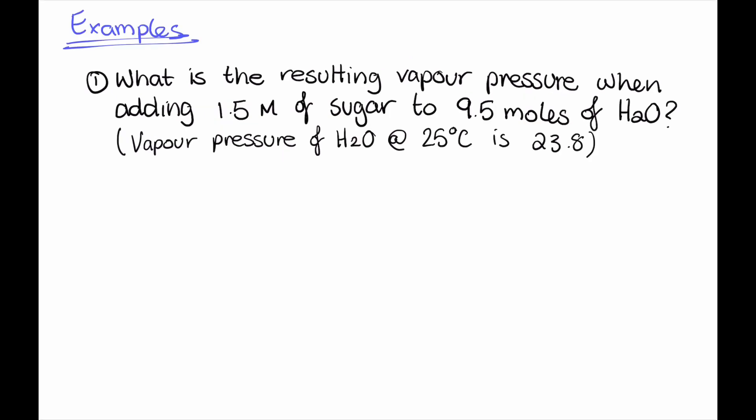So a sample question might ask you to calculate the resulting vapor pressure when you make a solution. In this example here, what is the resulting vapor pressure when we add 1.5 mole of sugar to 9.5 moles of H2O? And we're told that the vapor pressure at 25 degrees of water is about 23.8 torr.